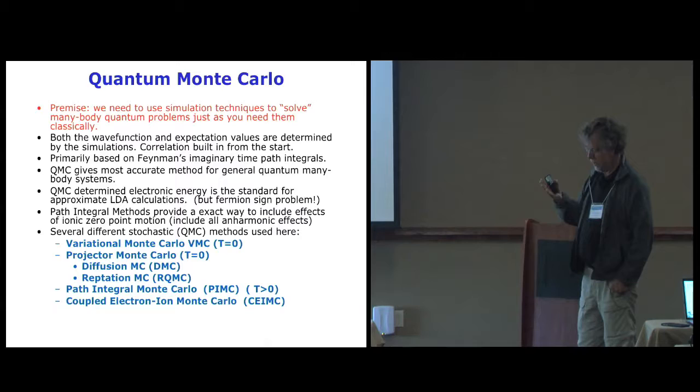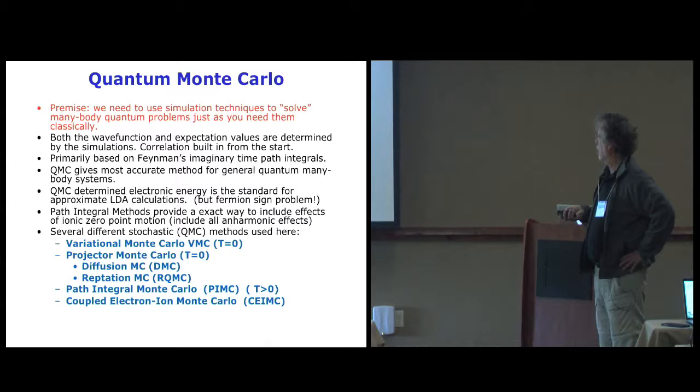Well, our premise is that we have to do simulations where we represent electrons and protons and point particles to solve the quantum many-body problem, just like you do classically, just like when you do classical water or some other protein or whatever. There's no reason why you can get away with mean field descriptions for electronic structure any more than you can for, say, a simulation of a protein. So it's basically based on Feynman's path integral, imaginary time path integral. There's a variety of these stochastic or quantum Monte Carlo methods that we use in what I'm going to describe, and so I don't have really a chance to go through them. Some of the other talks yesterday did describe them a little bit.